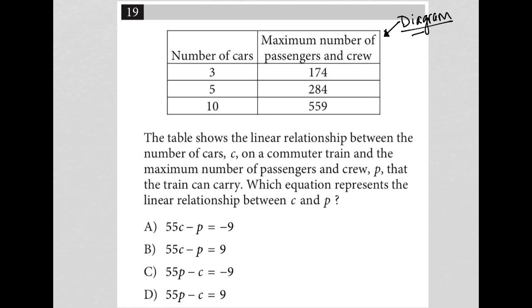What we have here is a table. The first column is number of cars. The second column is maximum number of passengers and crew. The question says the table shows the linear relationship between the number of cars C on a commuter train and the maximum number of passengers and crew P. So this is C values and these are P values that the train can carry.